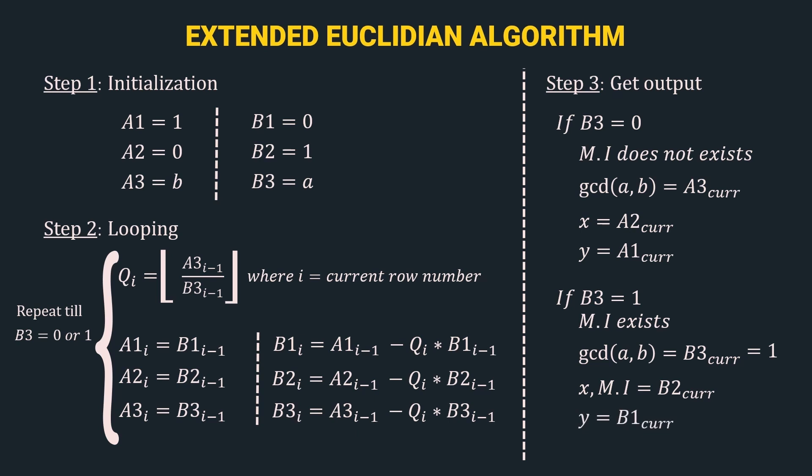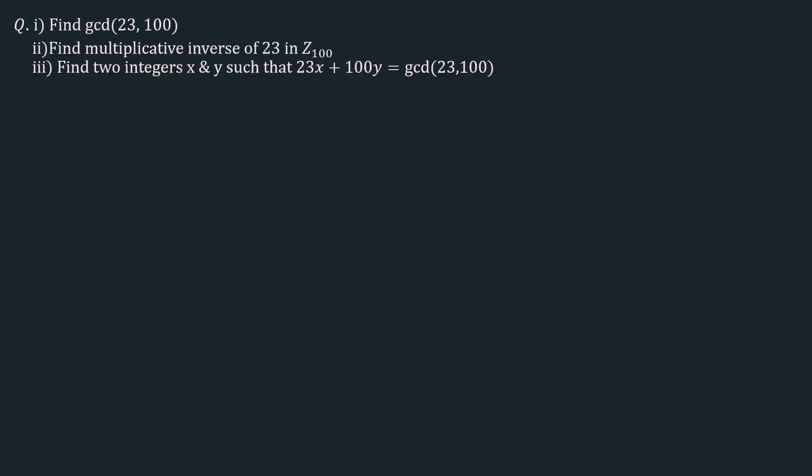At first glance the extended Euclidean algorithm looks complex, but with the example in the next slide it will be clear. The example is divided into 3 parts: find the gcd of 23 and 100; find the multiplicative inverse of 23 in Z_100; and find two integers x and y such that 23x + 100y = gcd(23, 100). Even though there are three questions, we can answer all of them with the single extended Euclidean algorithm.